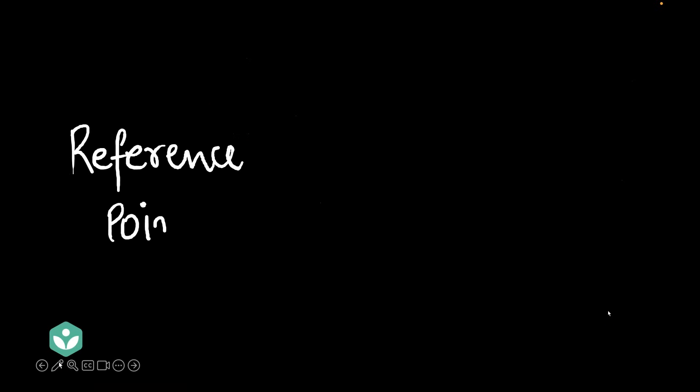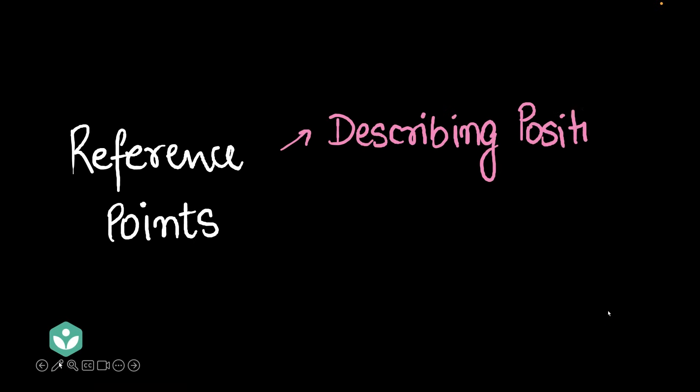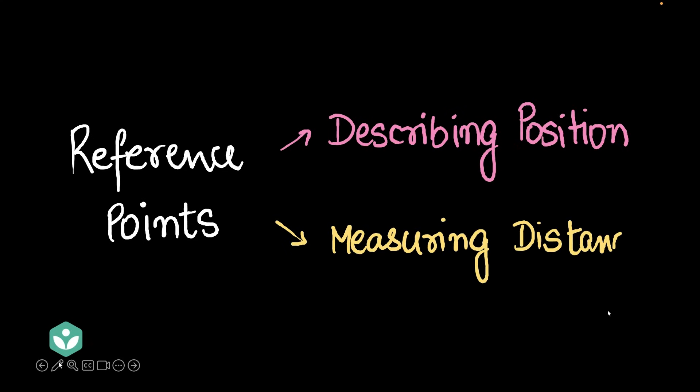To summarize, reference points are useful for two things: A — describing position, and B — measuring distances. That's it for this video. Thanks for watching.